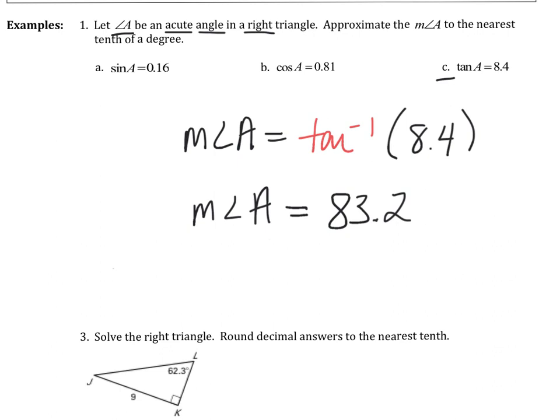Now, these examples are pretty straightforward because they already gave you the ratios. They already told you what function they were using. Now I want to start to think about how can I use these inverse functions in a right triangle?